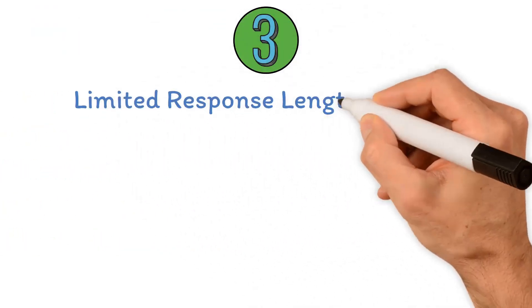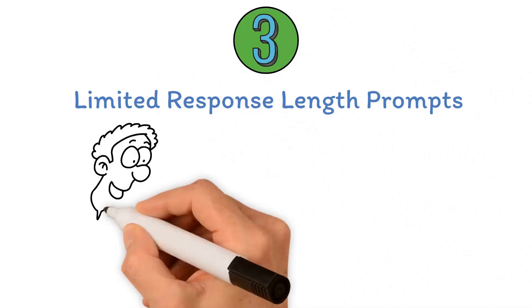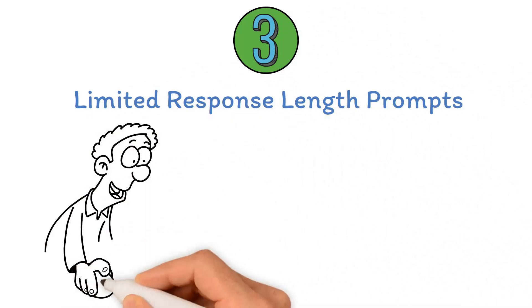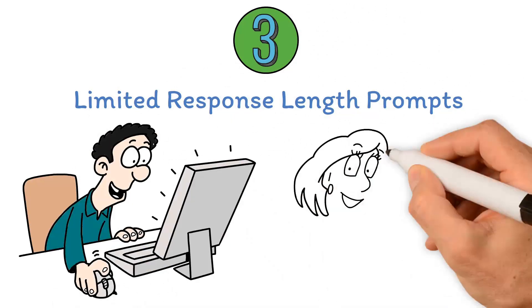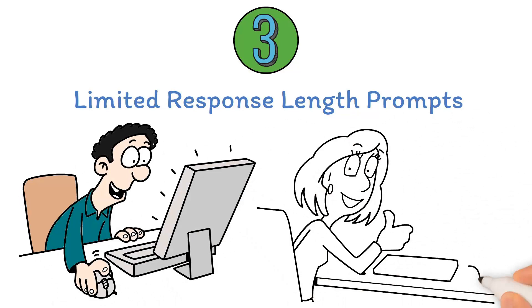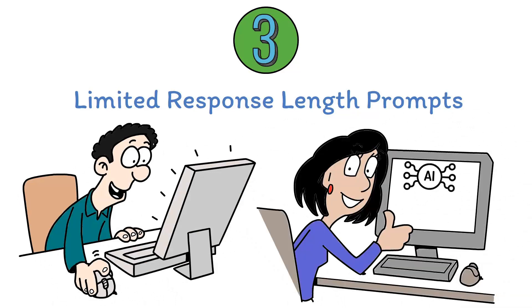Strategy three: limited response length prompts — constraining the word count to encourage concise and targeted responses from the AI model.